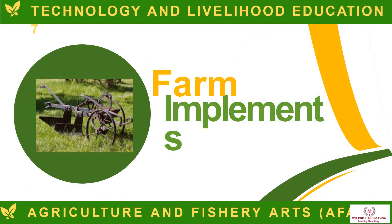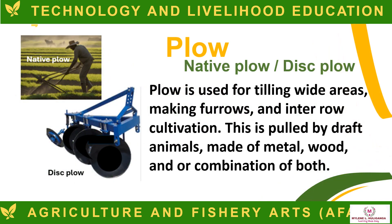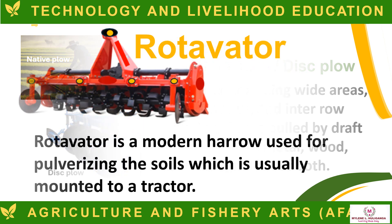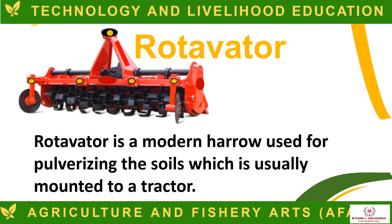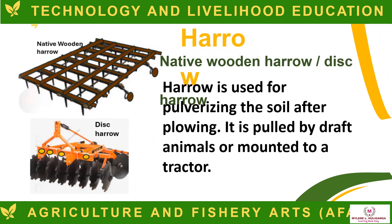The following are the farm implements. The Plow — Native Plow or Disc Plow — is used for tilling wide areas, making furrows, and inter-row cultivation. It is pulled by draft animals and made of metal, wood, or a combination of both. The Rotavator is a modern harrow used for pulverizing the soil, which is usually mounted to a tractor. The Harrow — Native Wooden Harrow or Disc Harrow — is used for pulverizing the soil after plowing. It is pulled by draft animals or mounted to a tractor.